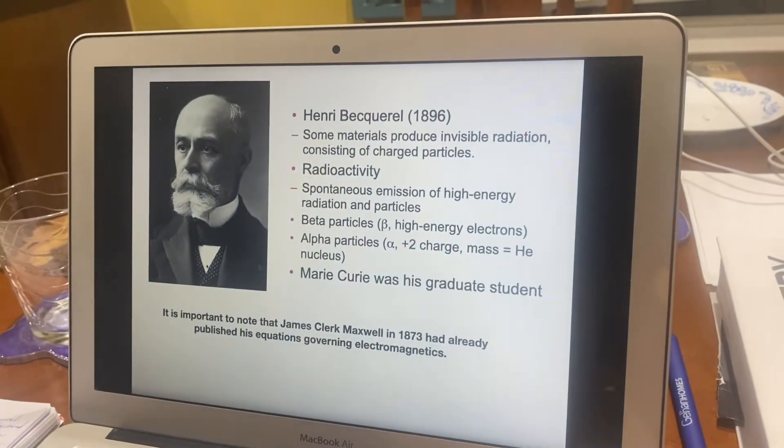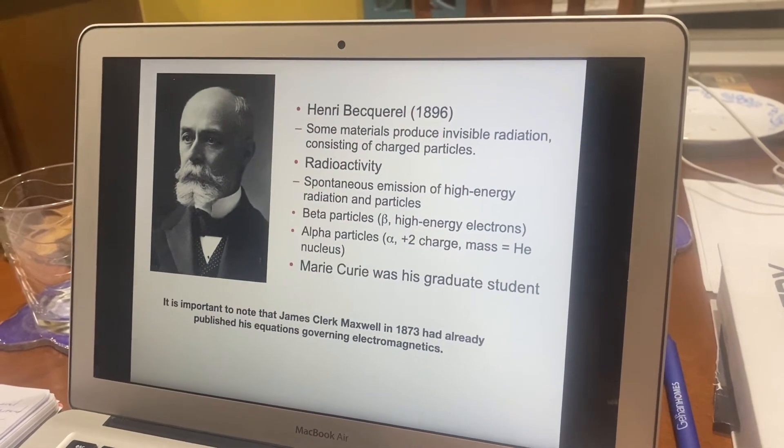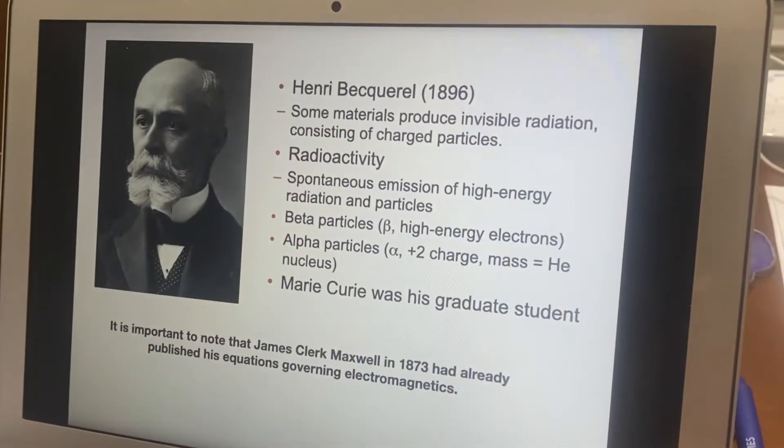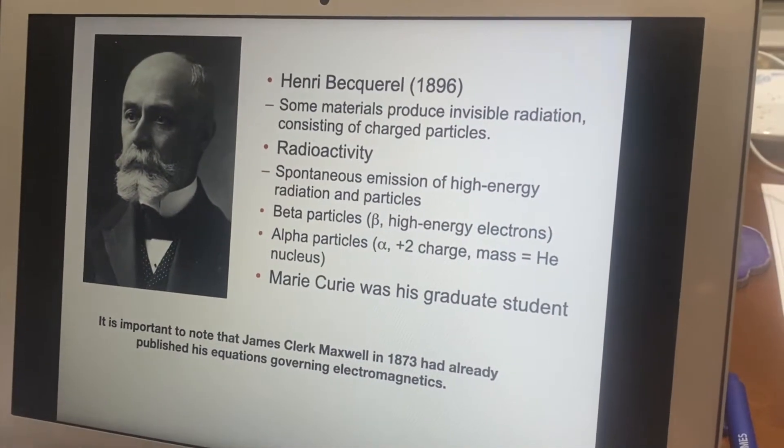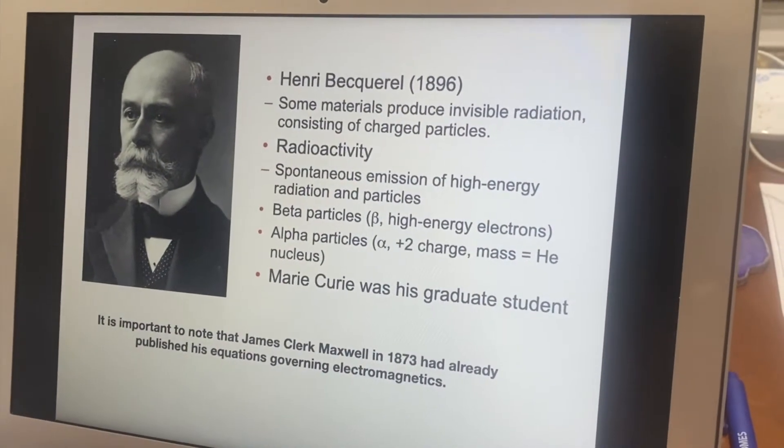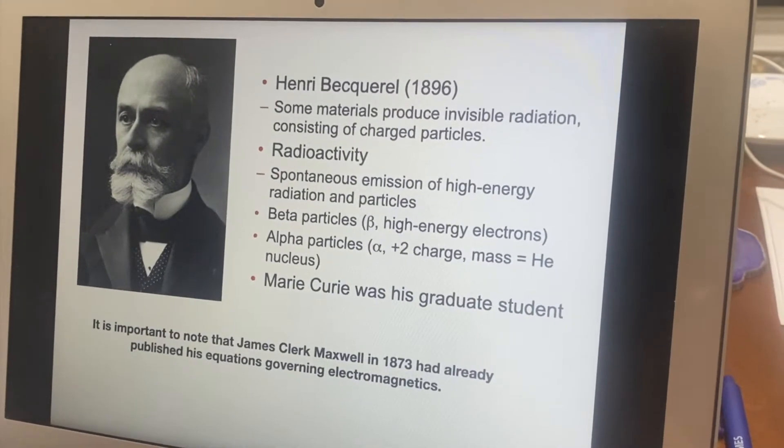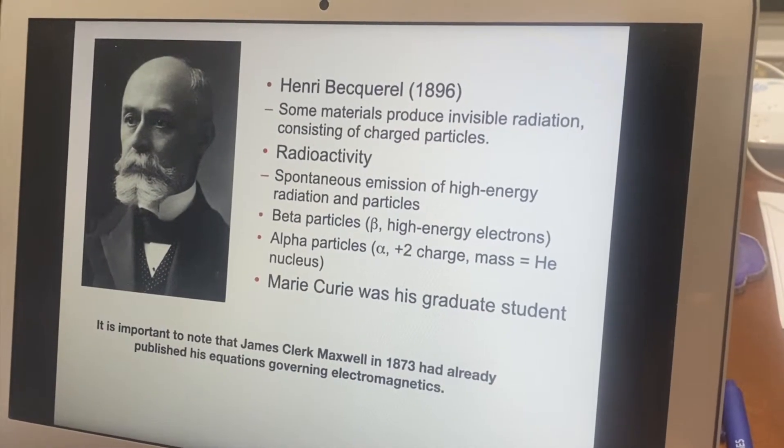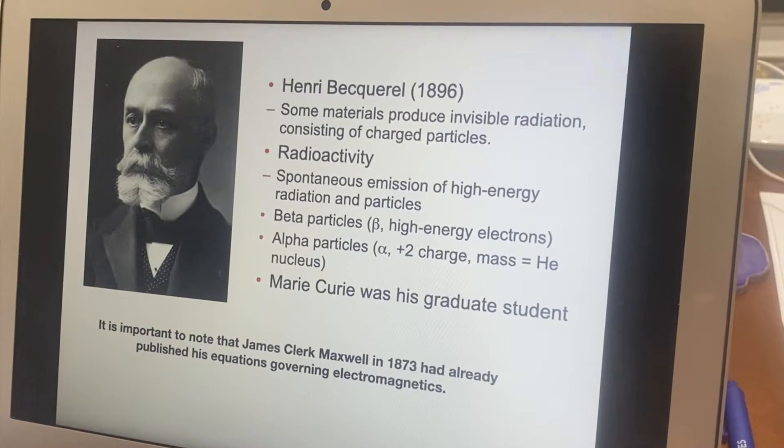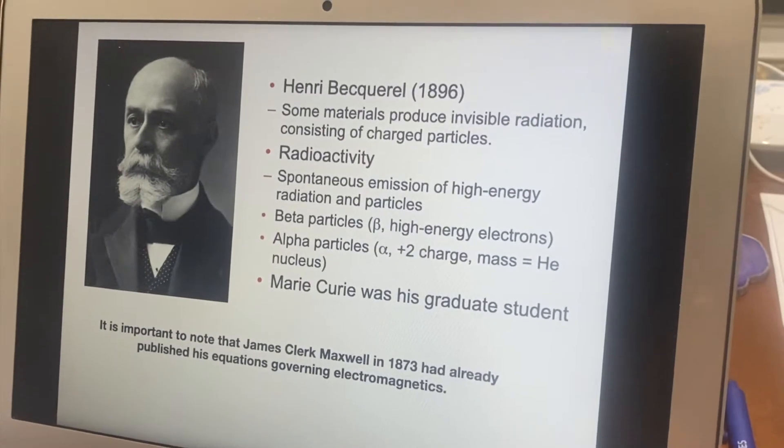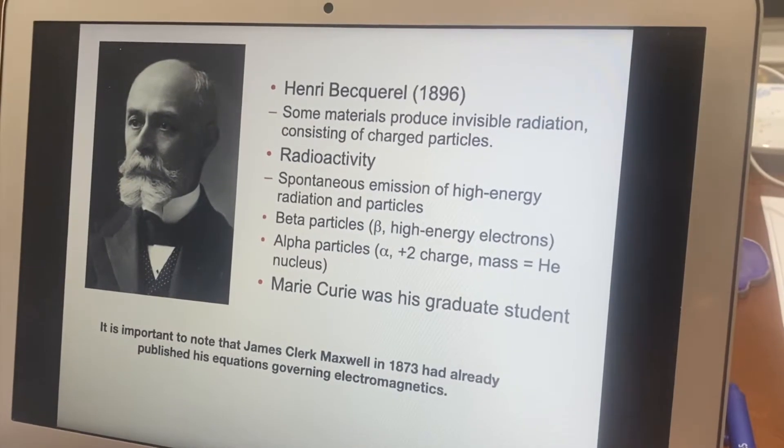We start with a little bit of history, we go back to 1896, Henri Becquerel. He was the one who first noticed that some materials produced what we commonly consider radiation at this point. He was looking at the charged particles that came off of them, he wasn't aware of the gamma rays.